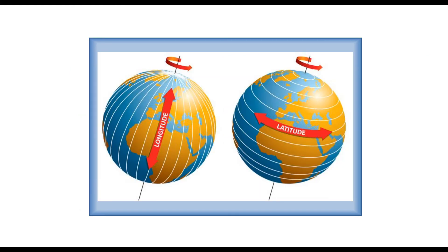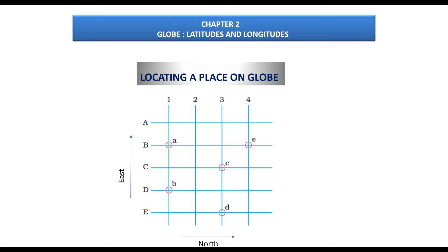The 180-degree meridian east and the 180-degree meridian west are on the same line. Longitude of a place is indicated by the letter E for east longitudes and W for west longitudes. To recall: latitudes are circular horizontal lines and longitudes are vertical lines. Using both, we can locate any place on the globe — a city, village, or town.